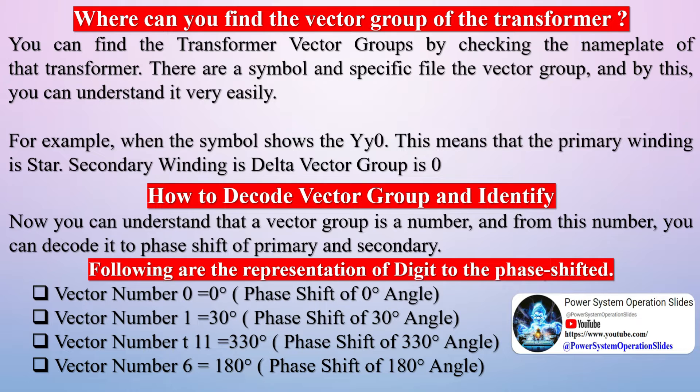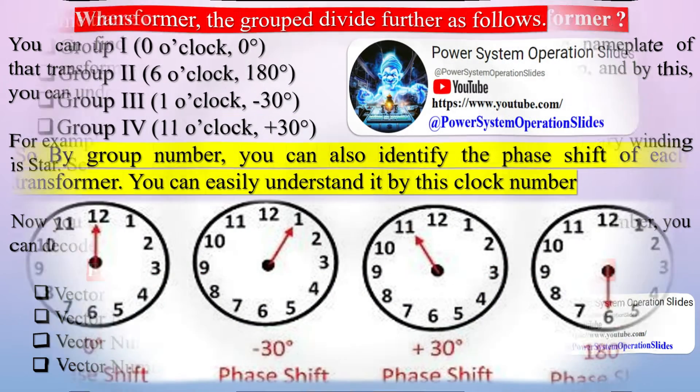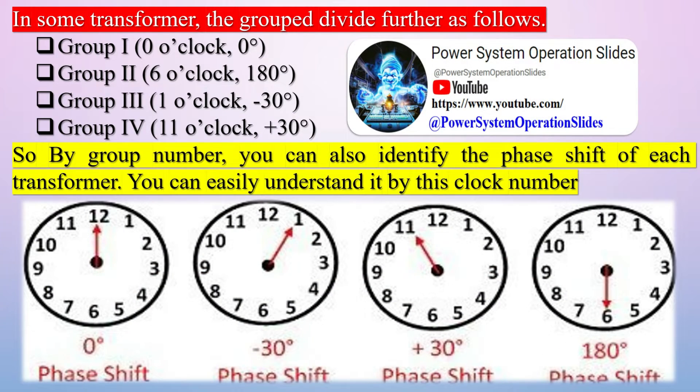But when the primary and secondary windings are connected differently, the secondary voltage waveforms will differ from the corresponding primary voltage waveforms by 30 electrical degrees. This is called a 30-degree phase shift.